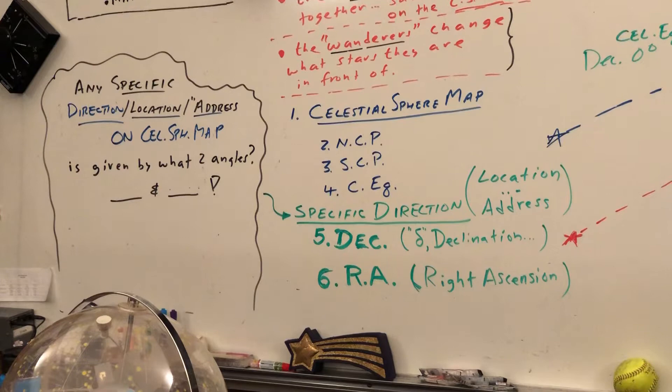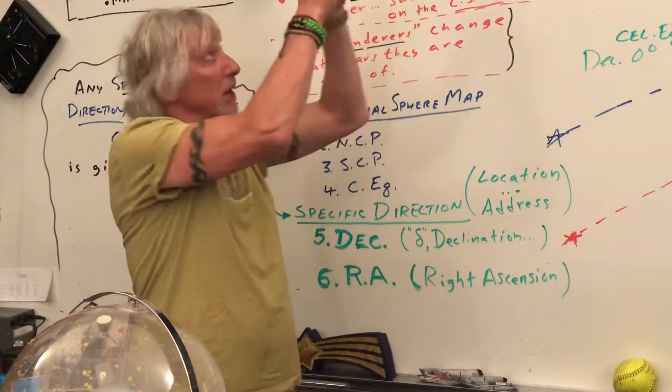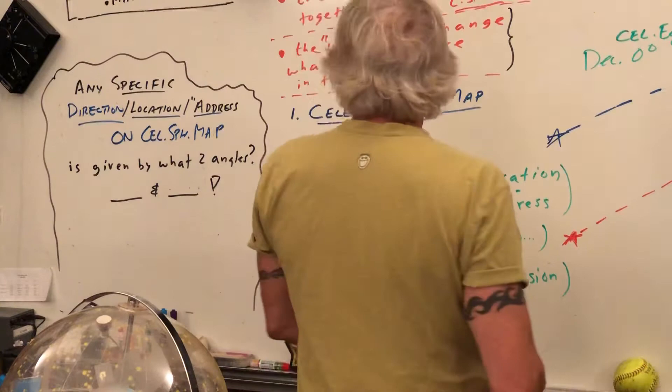There it is. Celestial sphere, that's one term. North celestial pole. What's at the north celestial pole in that direction? Well, there's south celestial pole, celestial equator, declination, right ascension.